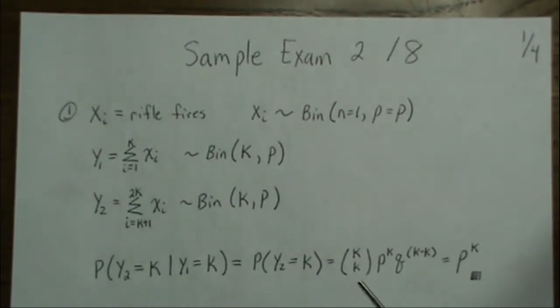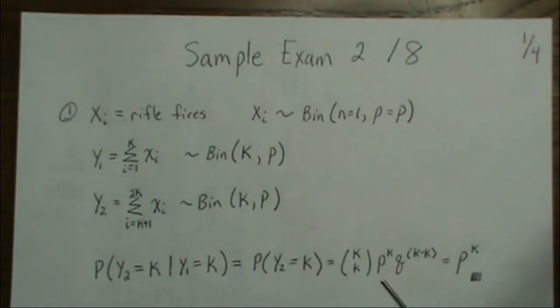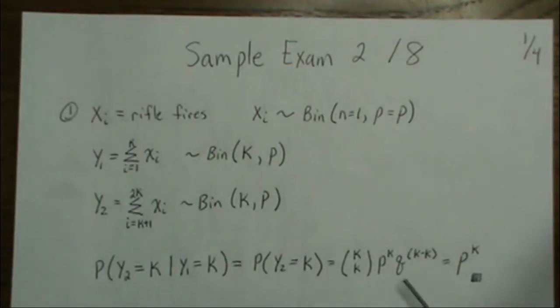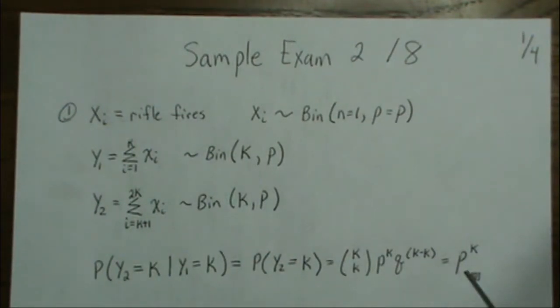This is a binomial: K choose K, times P to the K, times Q to the K minus K, which is just P to the K.